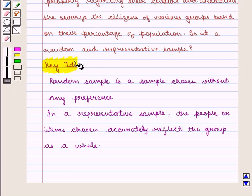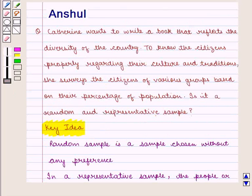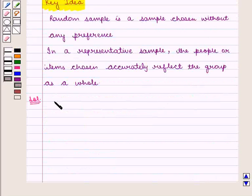With this key idea, we proceed to the solution. In this question, we are given that Catherine wants to write a book that reflects the diversity of the country, and for this, she surveys the citizens of various groups based on the percentage of population.